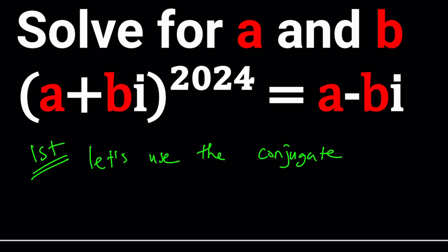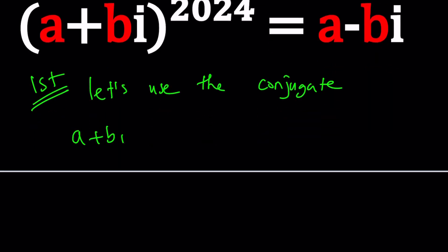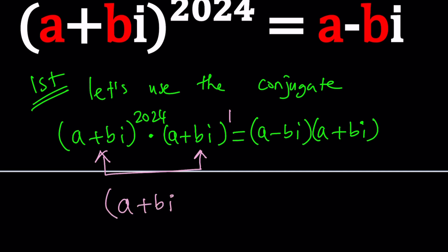So how do we use the conjugate? We take (a+bi)^2024 and we multiply it by (a+bi) itself, the same thing, because on the right hand side we already have the conjugate and we multiply it by its conjugate. So the conjugate of the conjugate is the same thing. On the left hand side, because we're multiplying two things with the same base, we get (a+bi)^2025 and that's equal to the product.